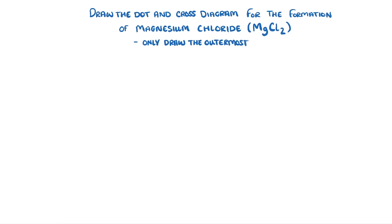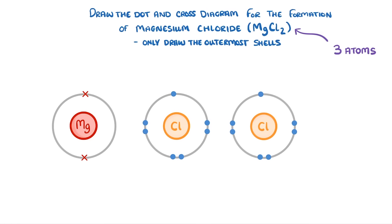Now this time we can see that we have three atoms in the compound rather than two. To start let's draw out our reactants. We have magnesium which has two electrons in its outer shell that it wants to get rid of and we have two chlorines both of which have seven outer electrons so they need one more each.